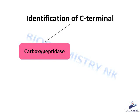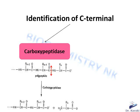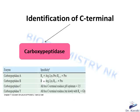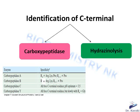To identify the C-terminal residue, we can use carboxypeptidase enzymatically, or a chemical technique. Carboxypeptidase cleaves the last peptide bond releasing the C-terminal amino acid. Carboxypeptidase A cleaves the last peptide bond if the last amino acid is not arginine, lysine, or proline, provided the preceding amino acid is not proline. Carboxypeptidase B cleaves if the last amino acid is arginine or lysine, provided the preceding amino acid is not proline. Carboxypeptidase C cleaves all free C-terminal residues at optimum pH 3.5, while carboxypeptidase Y cleaves all free C-terminal residues but slowly if the last amino acid is glycine.